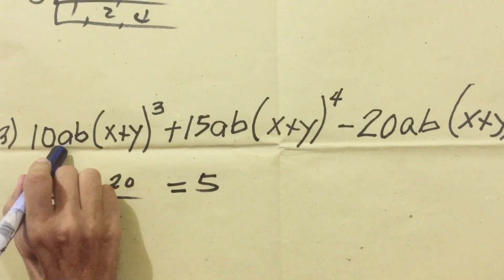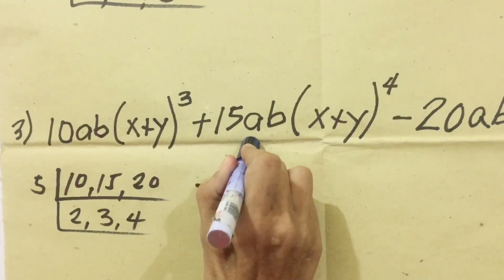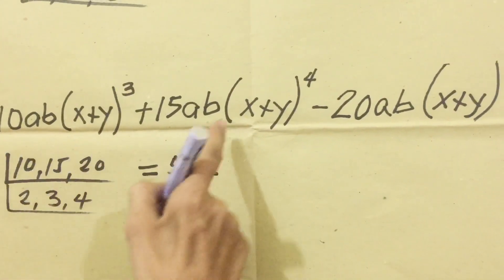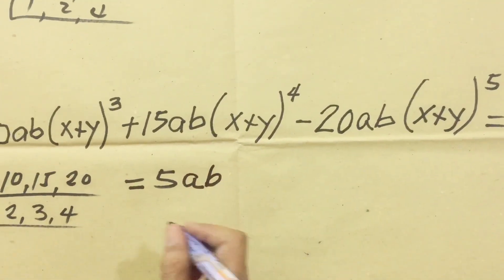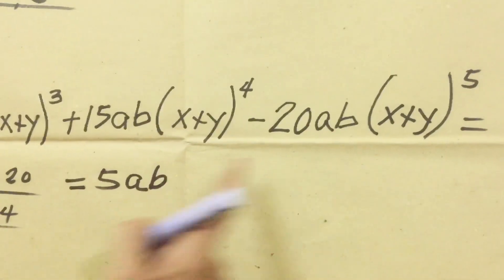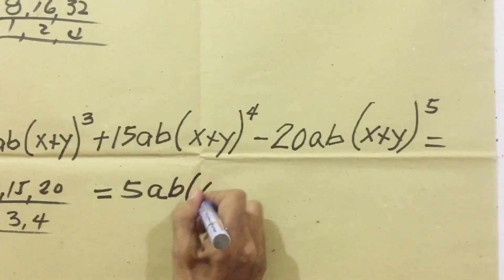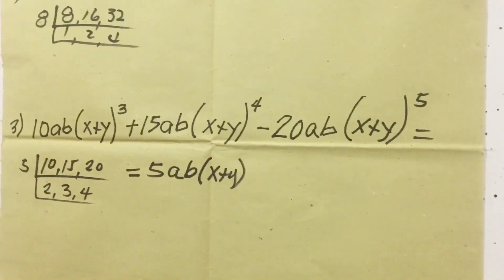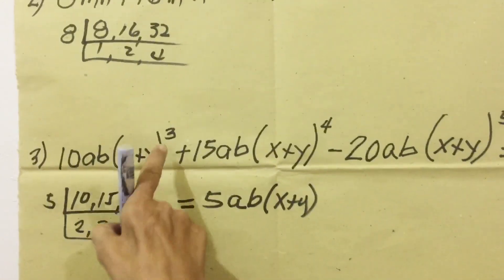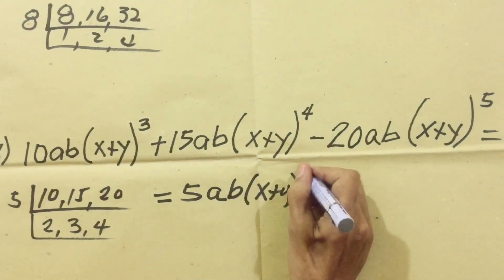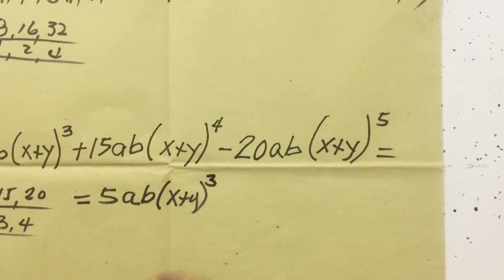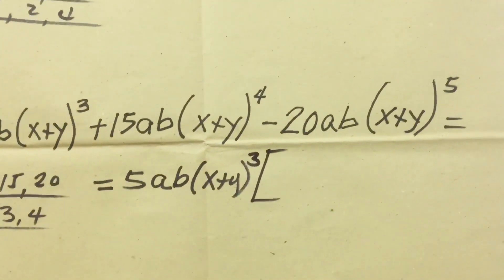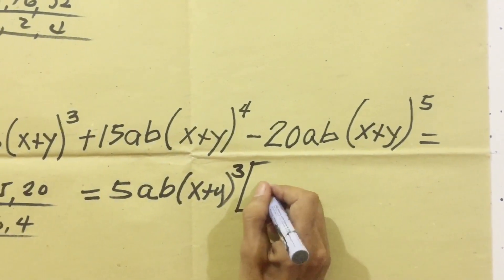Going to the variables, we check each term for variable A — all terms have A. Then for B — all terms have B. Now we look at the exponents. For the greatest common monomial factor, we take the lowest exponent. So for B, we take the exponent of 3 as the lowest. A is also present in all terms so we include it.